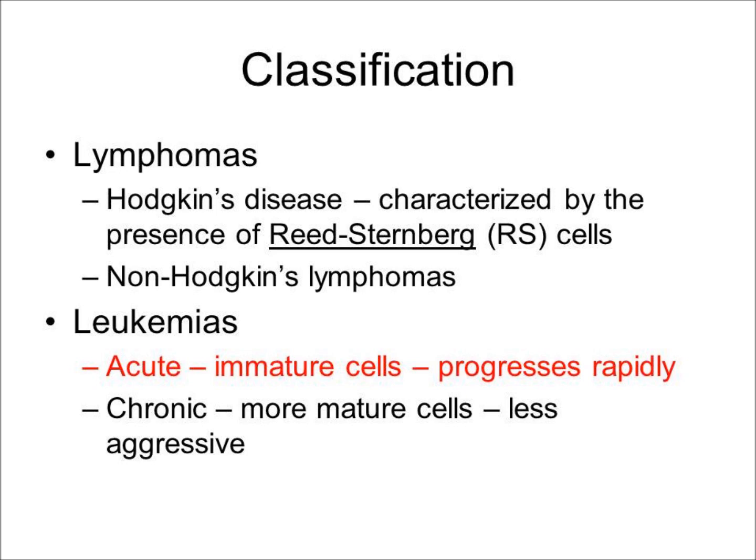Leukemias can be classified as either acute or chronic depending upon the nature of the malignant cell. Acute leukemias are derived from immature cells and tend to progress rapidly, whereas chronic leukemias are derived from more mature, more differentiated cells and progress less rapidly. In this laboratory, you will be observing two examples of acute leukemias.